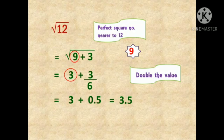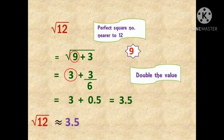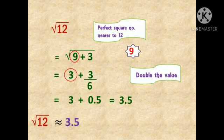So the approximate square root value of 12 is equal to 3.5. You may even check on a calculator — the answer will be the same. If we use the long division method to calculate the square root of 12, it will take a long time. But once you have practice with this method, you can find the square root of non-perfect square numbers within a few seconds. We solved the square root of 12 by taking the nearest perfect square as 9.